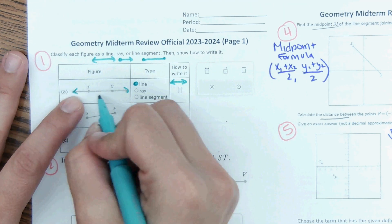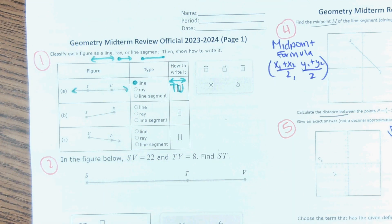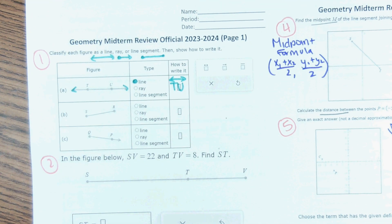And then to name it, you use two points on the line, just like TU. If it had another point, you would still only use two points on that line to name it.